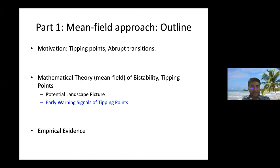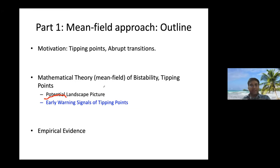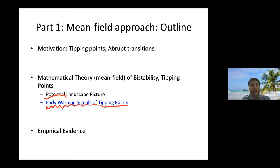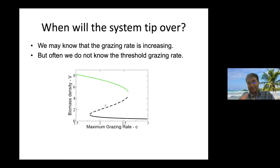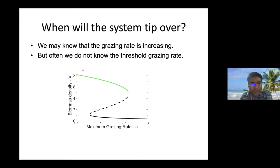Can we go further? One purpose of mathematics is not just to reproduce empirically observed features — can we also predict or anticipate tipping points? In the context of the bifurcation diagram, imagine a real system that follows this diagram. The grazing rates are increasing, but we don't know if we are far from or close to the tipping point. Is there some way of knowing the current parameter value from the available data? That's the question we're now interested in.